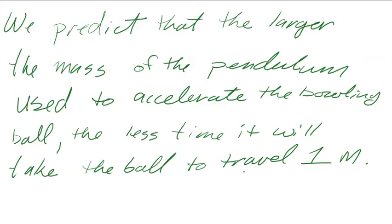Okay, so this is how you do your prediction. It's okay to use we. We predict that the larger the mass of the pendulum used to accelerate the bowling ball, the less time it will take the ball to travel one meter.